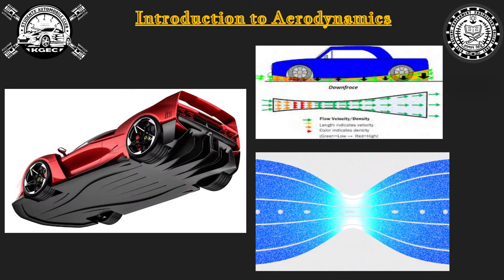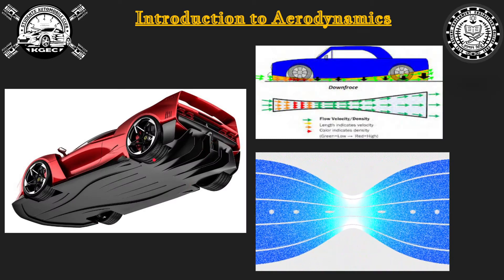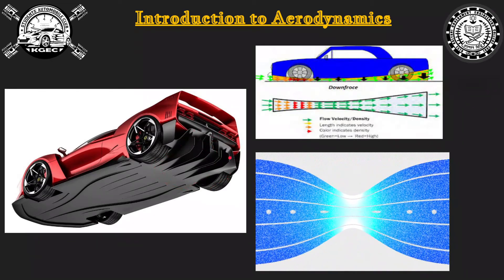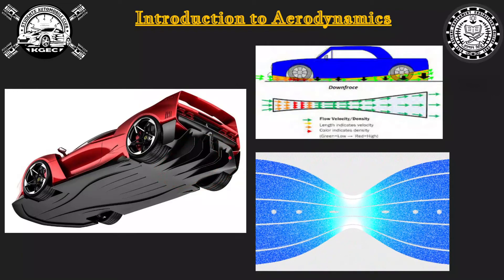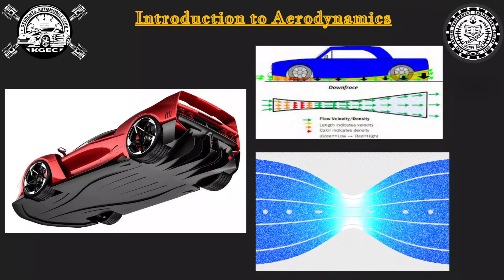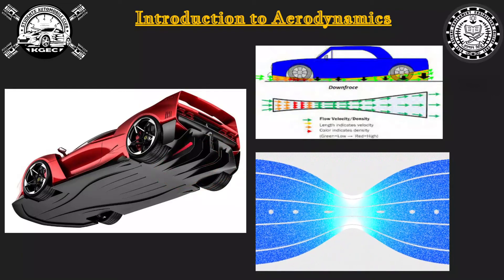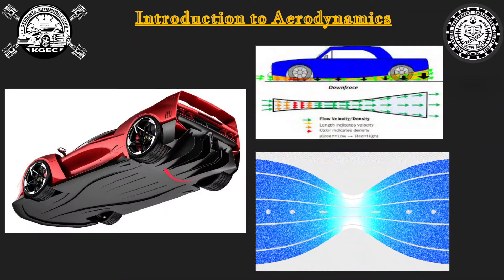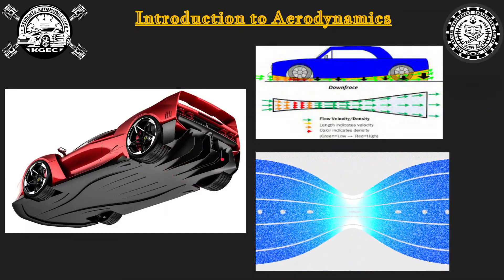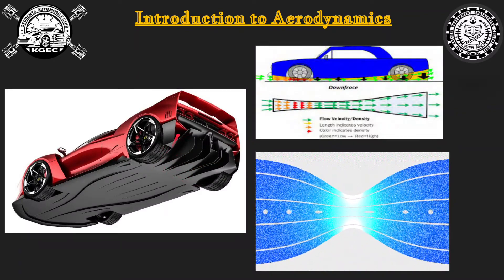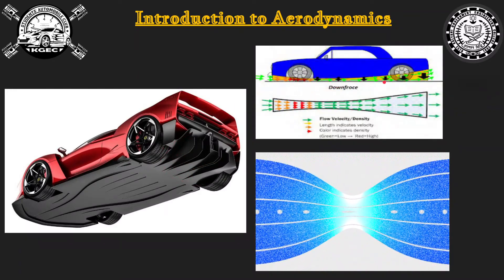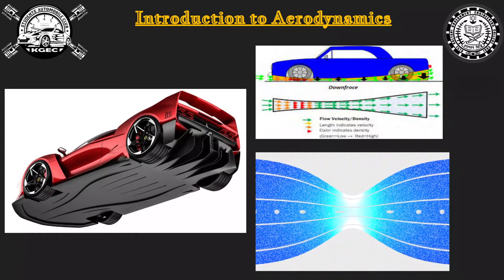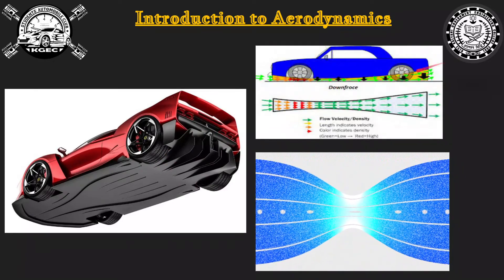Next we have diffusers. If you haven't seen them on actual cars, you may have seen them on your RC or remote control toys. The back side of those toys has a cog-like shape — a gradually increasing area — that is the diffuser.